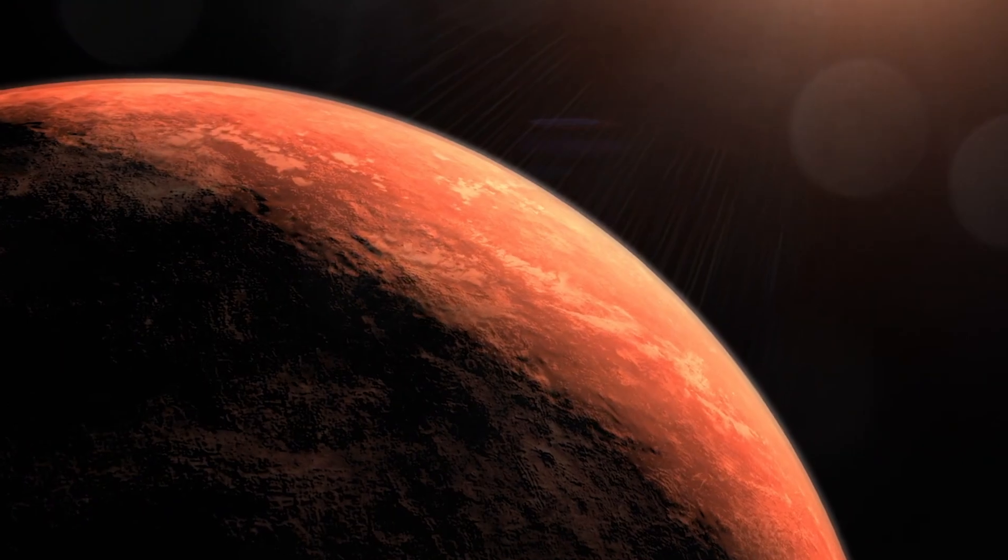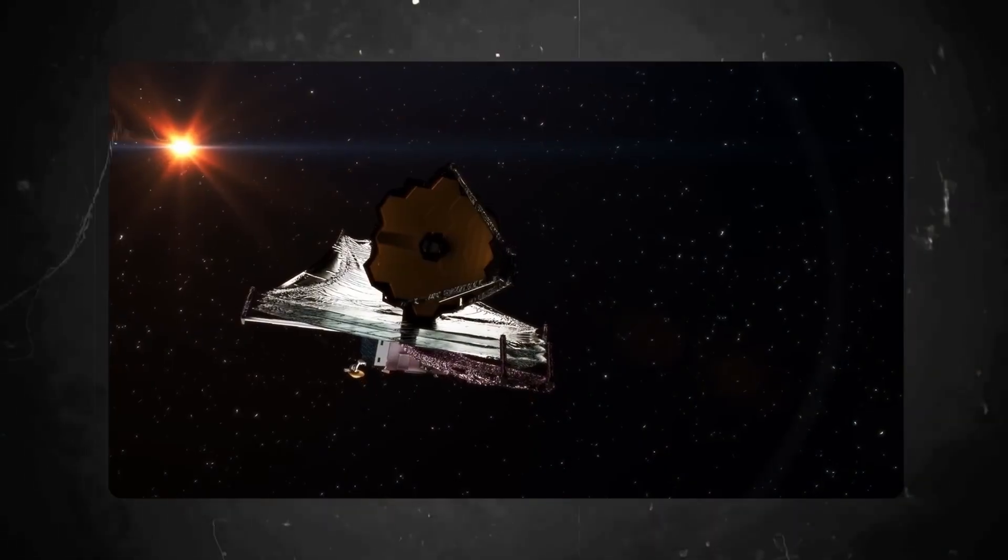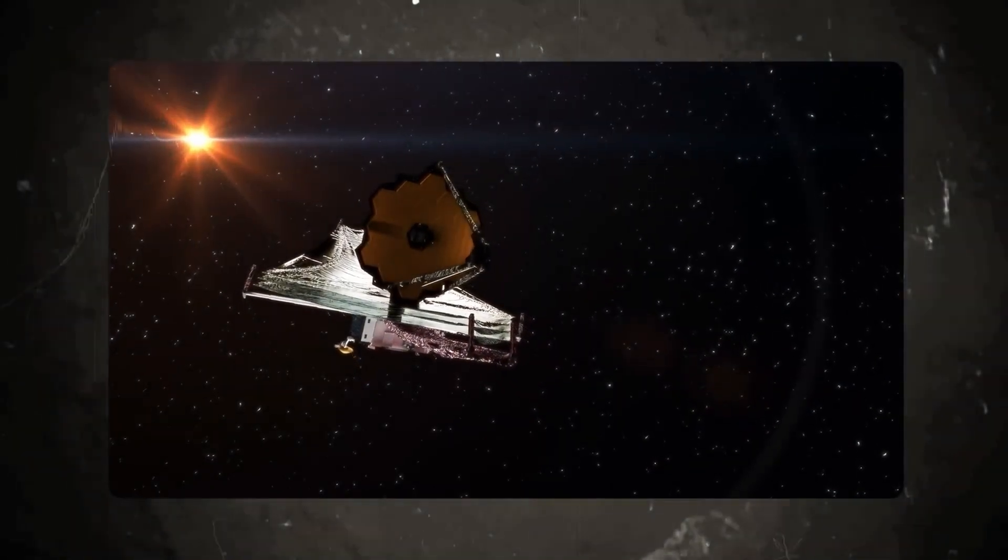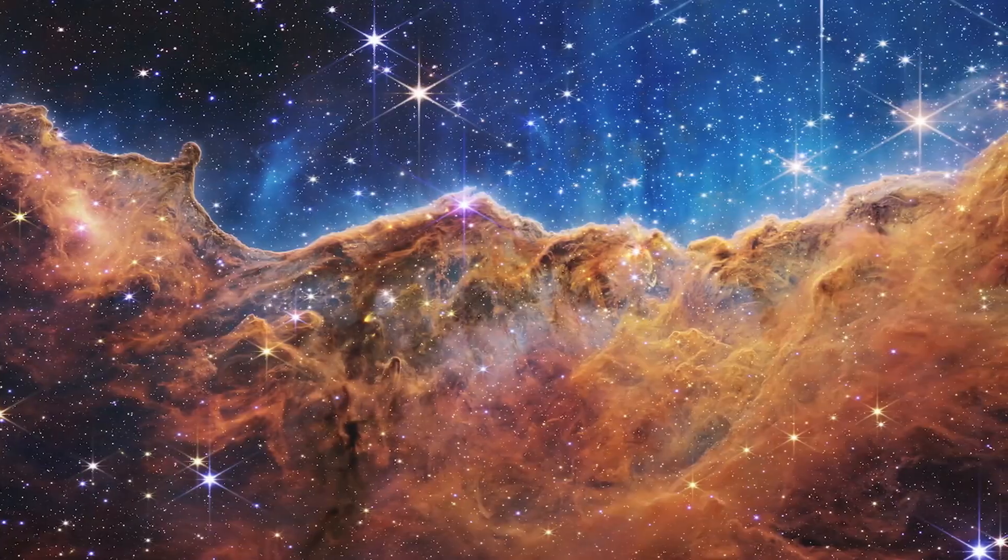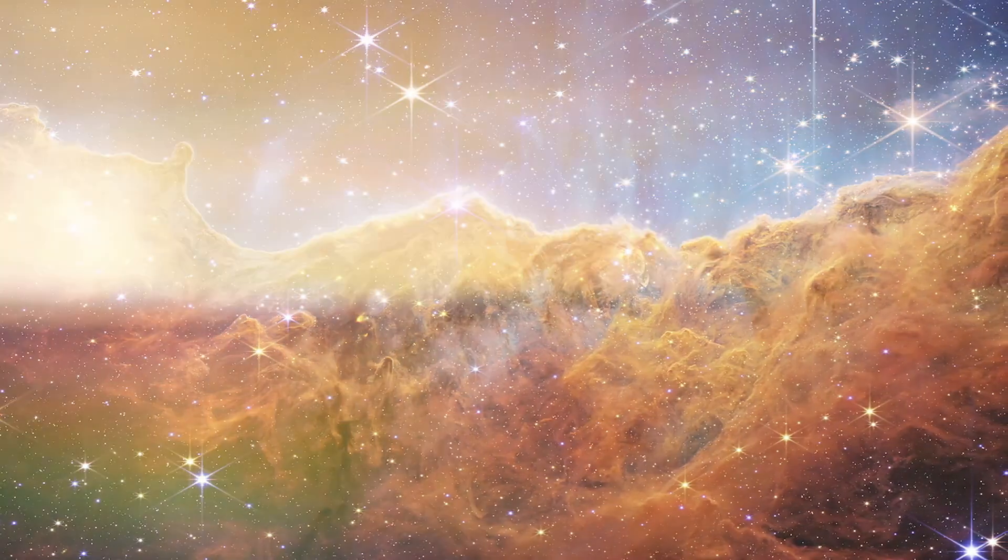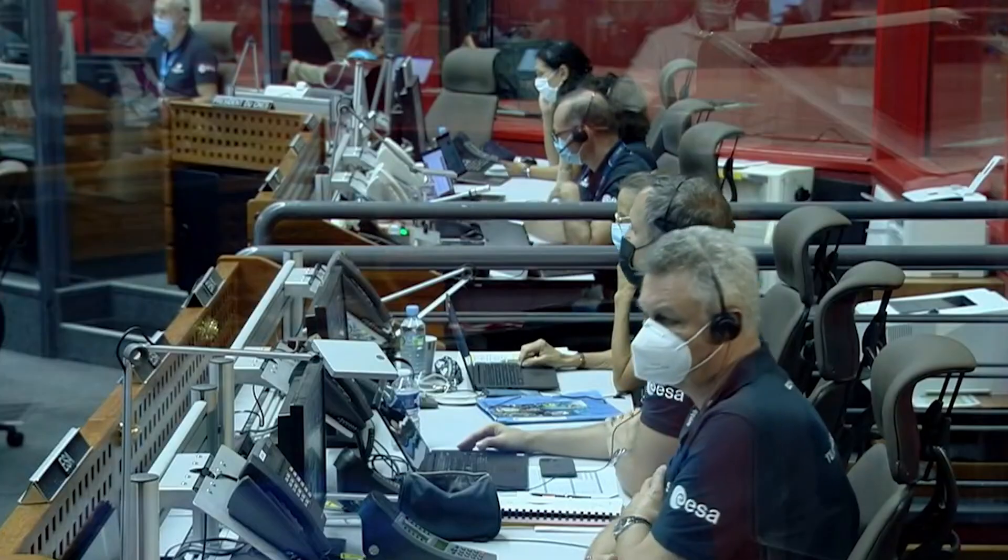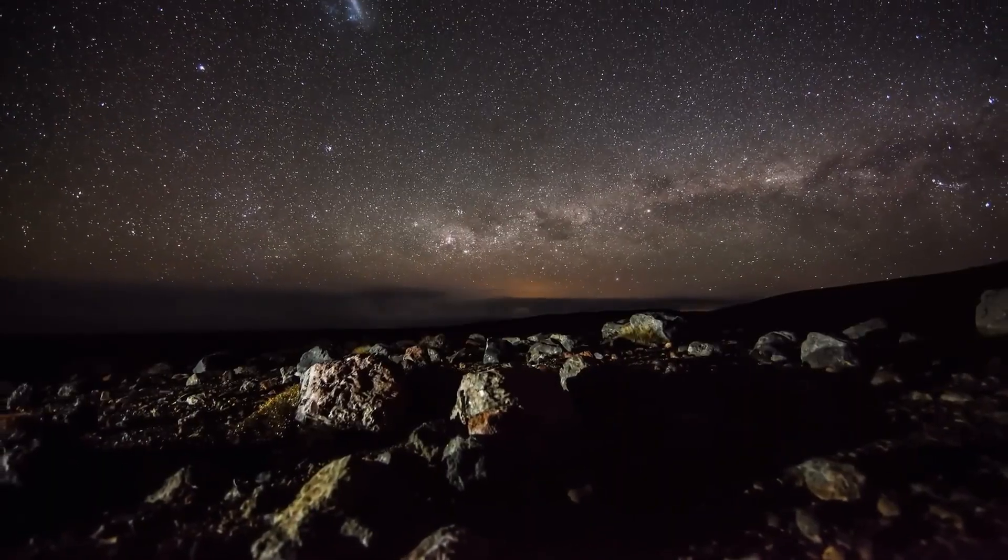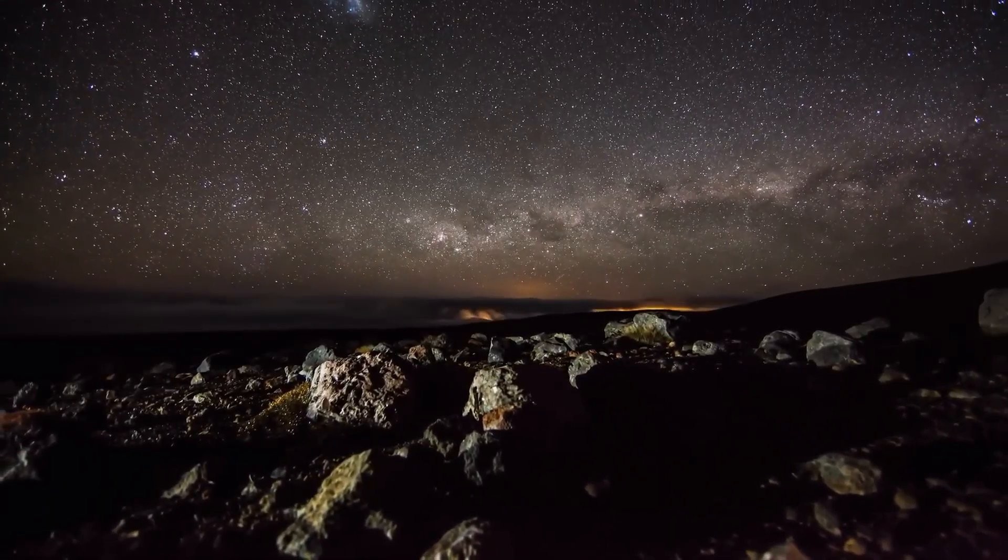Proxima b, a planet orbiting the closest star to Earth, has shocked scientists worldwide with signs of civilization. Could this be proof of an alien society? And if so, what secrets are they hiding? Stay tuned as we dive into this mind-blowing discovery that has everyone talking.